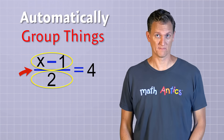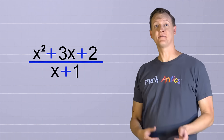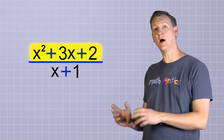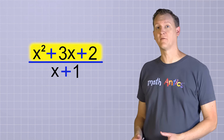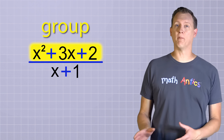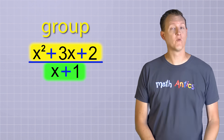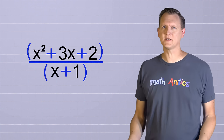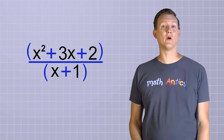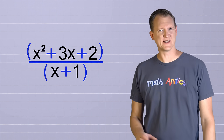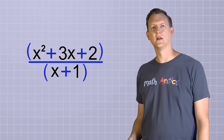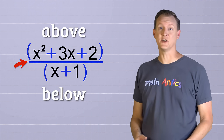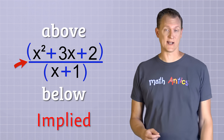For example, in a fancy algebraic expression, everything that's on top of the fraction line forms a group, and everything on the bottom of the line forms another group. Of course, we could put parentheses there if we wanted to make it really clear, but it's not required. Grouping above and below a fraction line is just implied in algebra.